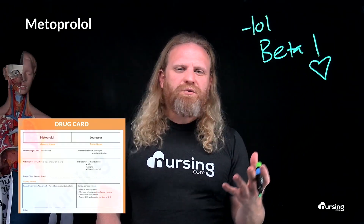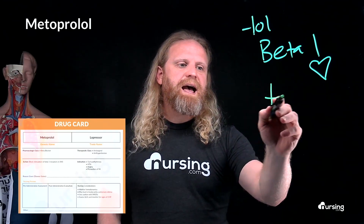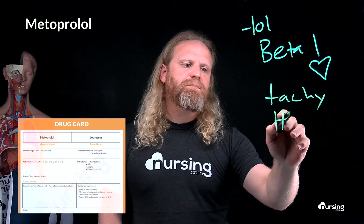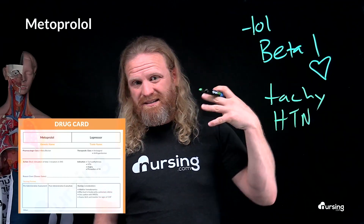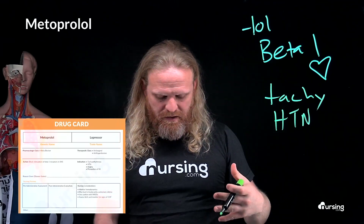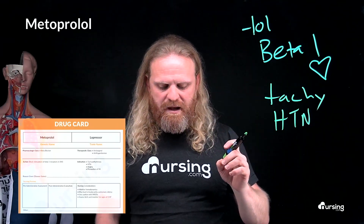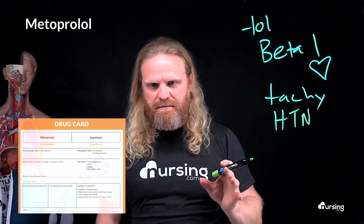By blocking beta-1 receptors in the heart, metoprolol is used for tachycardia, hypertension, angina, prevention of MI, and management of heart failure.